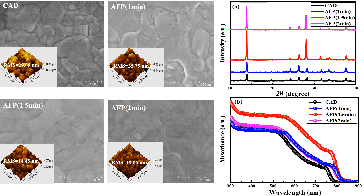We concluded that if there are open spaces at the grain boundaries, incoming light will pass through those open areas and be lost. However, in the anti-solvent fumigation process for 1.5 minutes, the grain boundaries were compact with fewer open areas, making it difficult for incoming light to pass through. That light is instead absorbed, giving us more photogenerated charge carriers compared to conventional anti-solvent dripping.